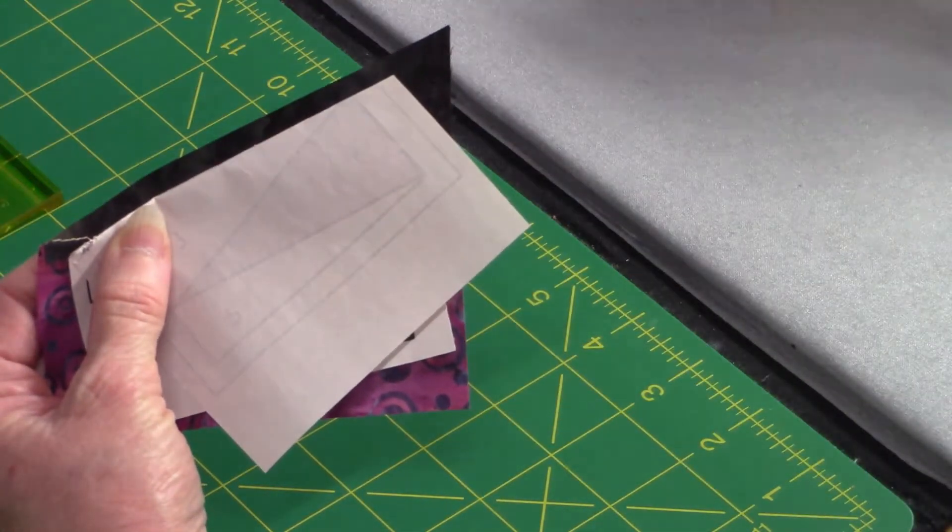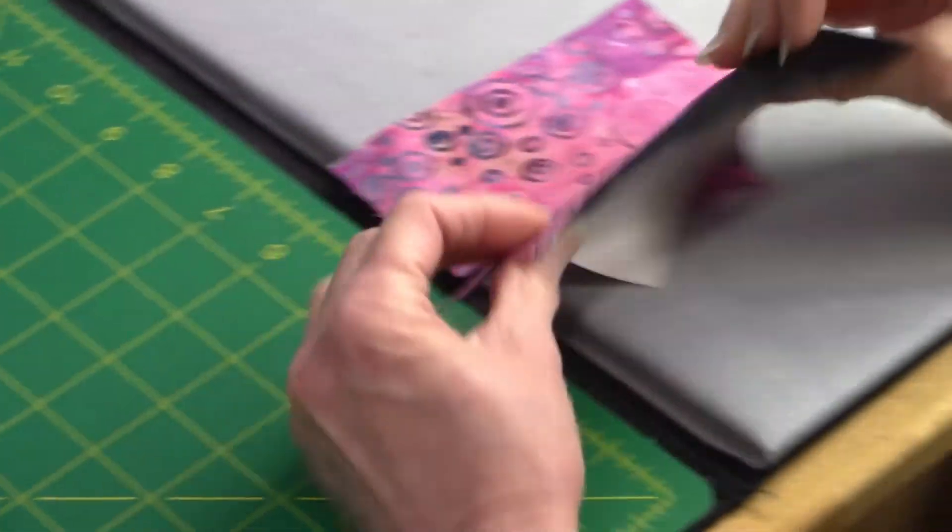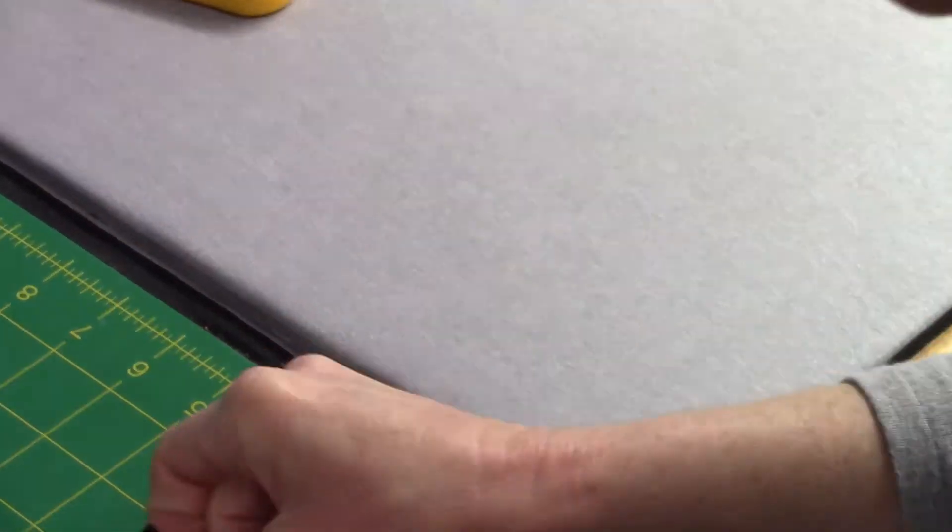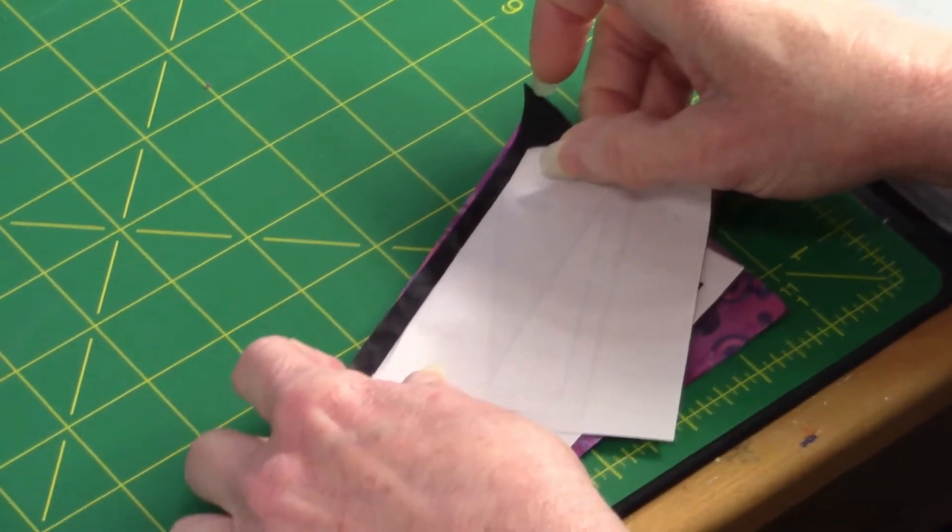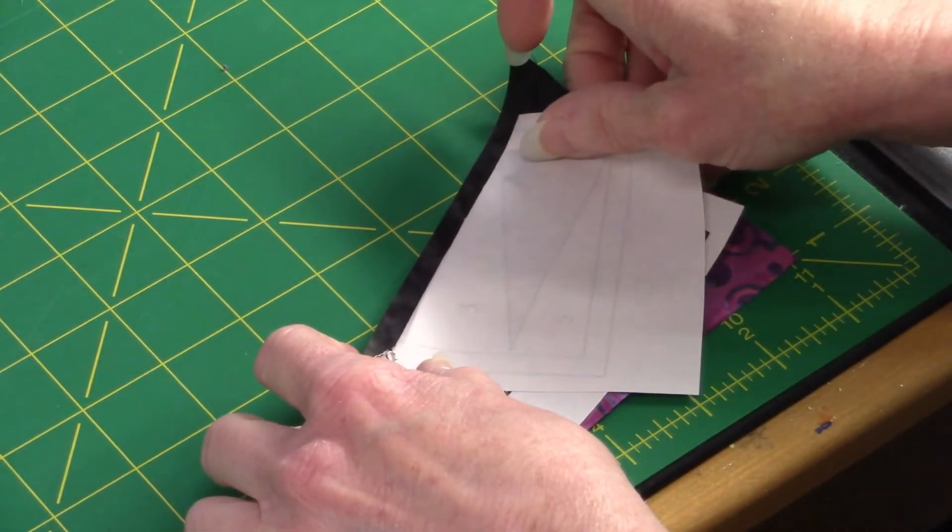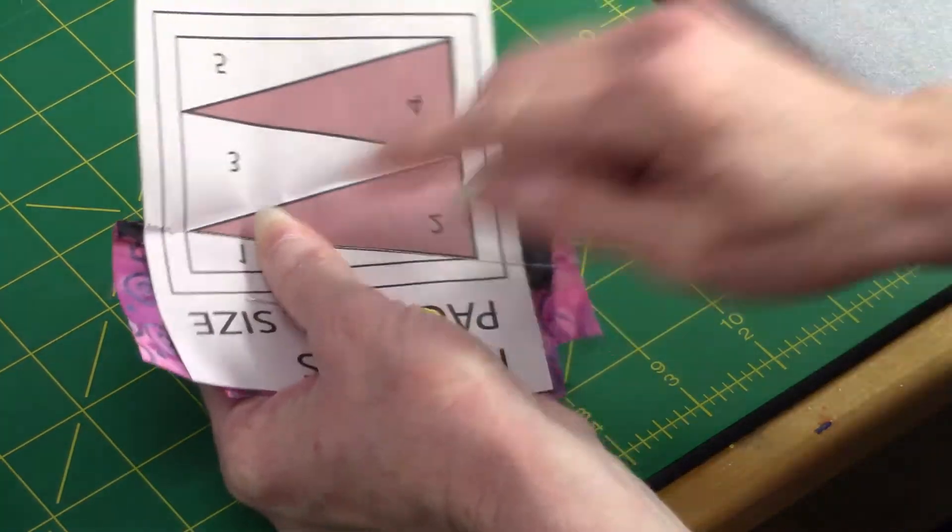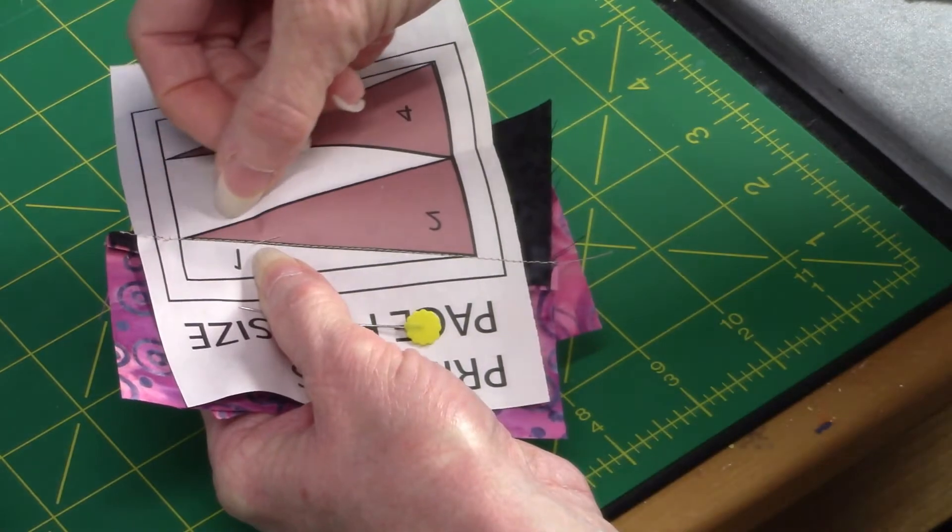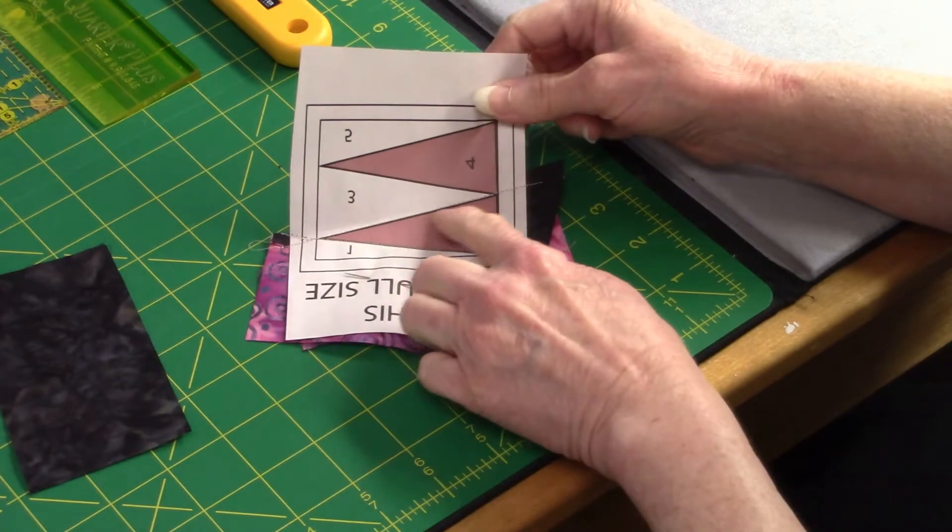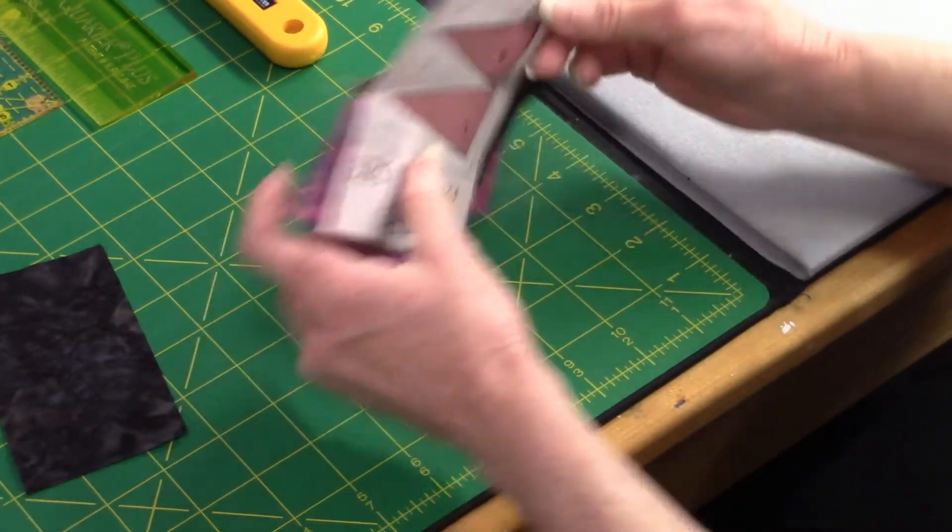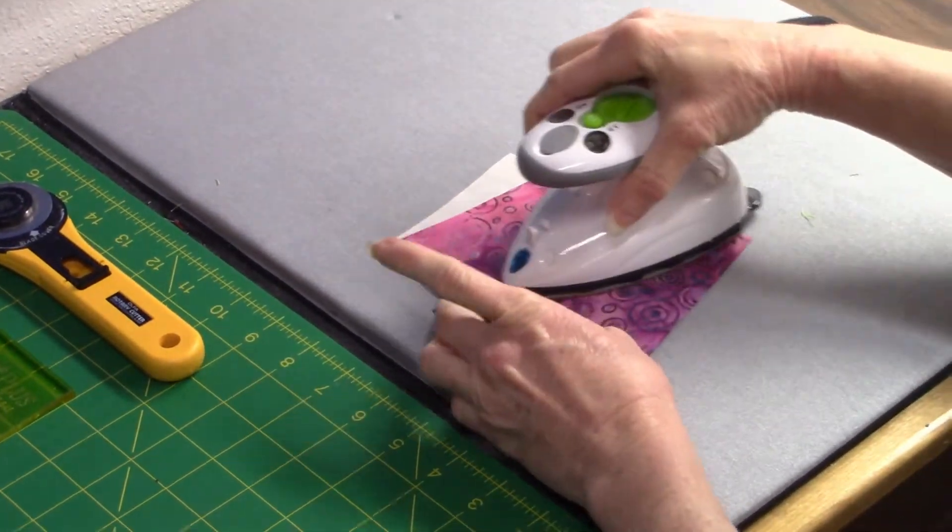And now I'm going to take another piece of pink, putting it right side to the right side of the black, lining it up right here so it's centered or fairly close. You want to keep it pretty centered. And then I'm going to fold my paper back and I'm going to go back and stitch again right along that line. Now I've stitched it along between two and three. I'm going to take it here and press it back. This is what I do on each seam.